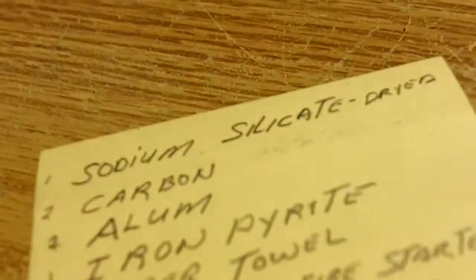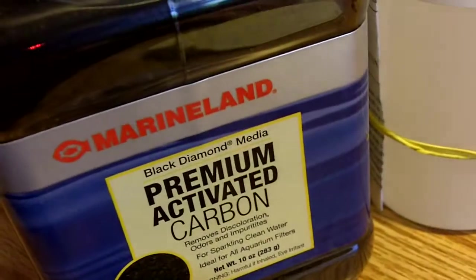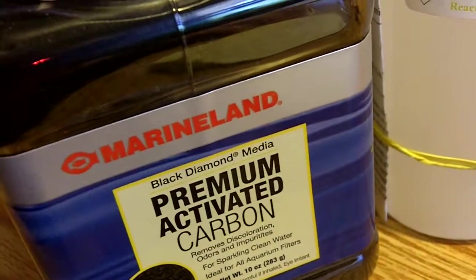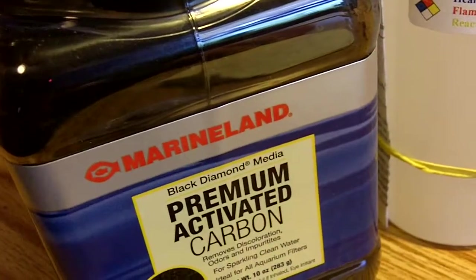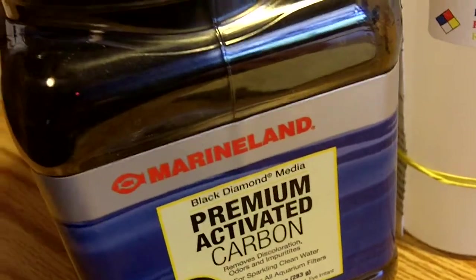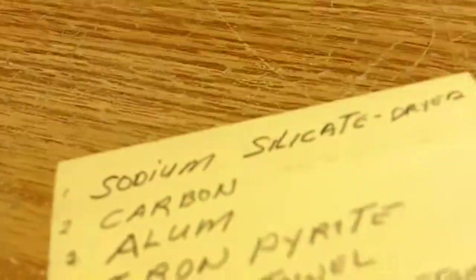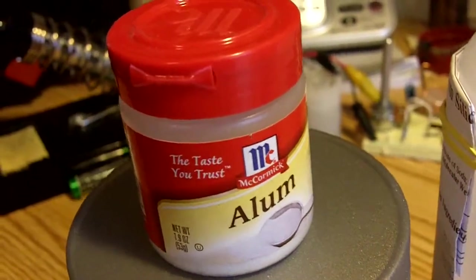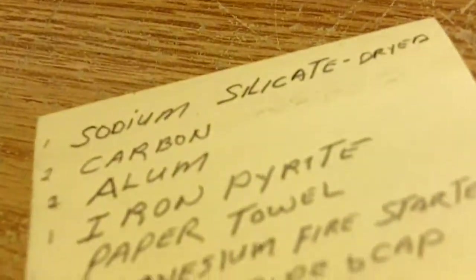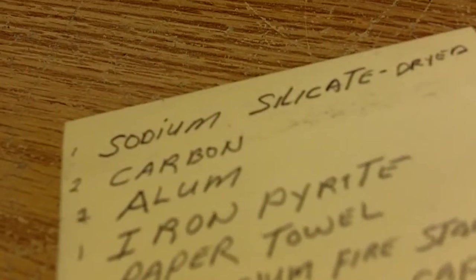The next one here is the carbon, and that's right there. That's pre-activated carbon and that simply is fish tank filter material. I grind that up a bit too. And the next one, the alum, that's supermarket right off the shelf. I use it just as it is.